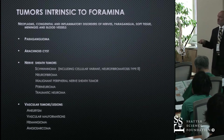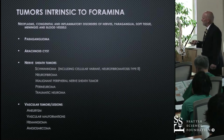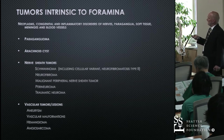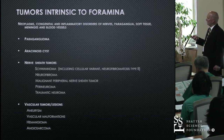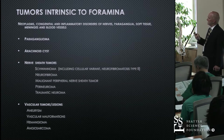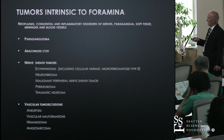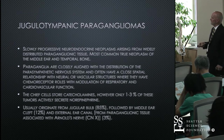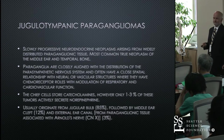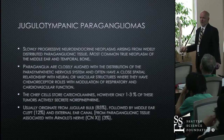Let's jump now to those tumors intrinsic to the foramina of the temporal bone. There's a long list, and unfortunately we can't go over all of them in detail, but we'll touch on several of the more common ones. Paragangliomas, arachnoid cysts, nerve sheath tumors of course are very important, and vascular tumors are less common but an important aspect. Paragangliomas are distributed throughout the body.